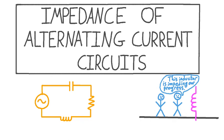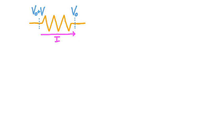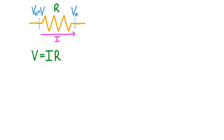Since our goal is to generalize resistance, let's review some of the properties of resistors. In a resistor, the resistance R provides the constant of proportionality between the current I and the voltage drop across the resistor V. We can state this relationship as Ohm's law: V equals IR, which is true whether the current is alternating or direct. It is always true that V equals IR.